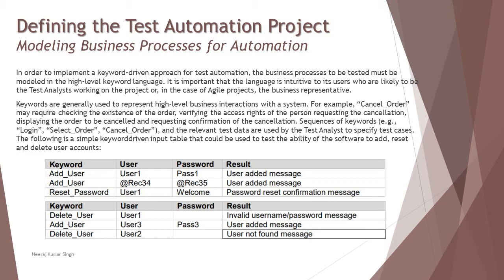For example, looking at this point, we have 'add user' with user one and password one — the user added message should be resolved. Adding another user with another credential but resetting the password requires an admin confirmation, so user one and 'welcome' is there. For 'delete user', a password is not required — you just have to put a username which you want to delete. Probably you are the admin and have the rights, so you just define the username, select the user, and delete it.